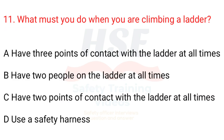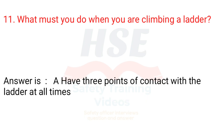Question 11: What must you do when you are climbing a ladder? A. Have three points of contact with the ladder at all times. B. Have two people on the ladder at all times. C. Have two points of contact with the ladder at all times. D. Use a safety harness. Answer is A. Have three points of contact with the ladder at all times.